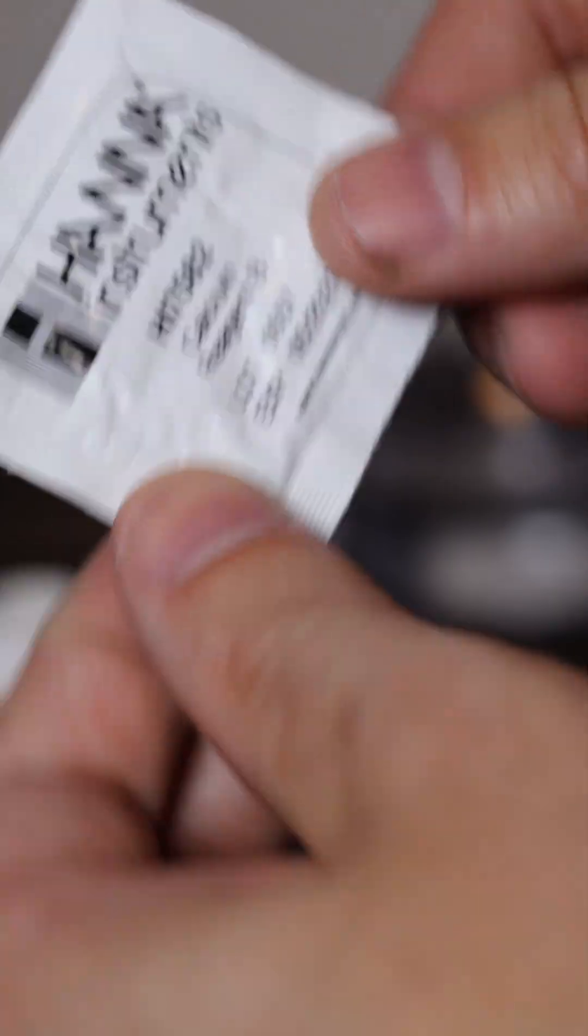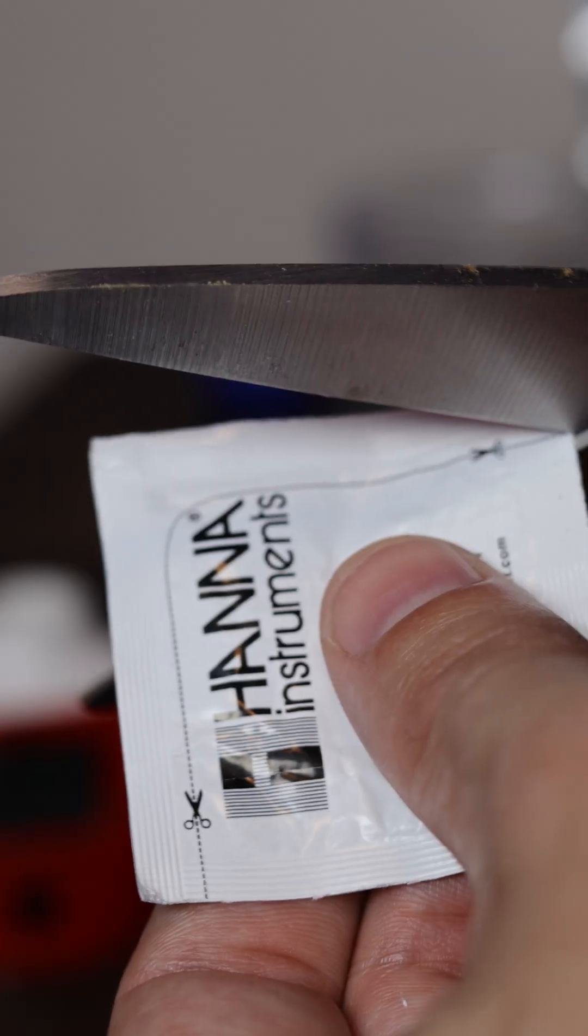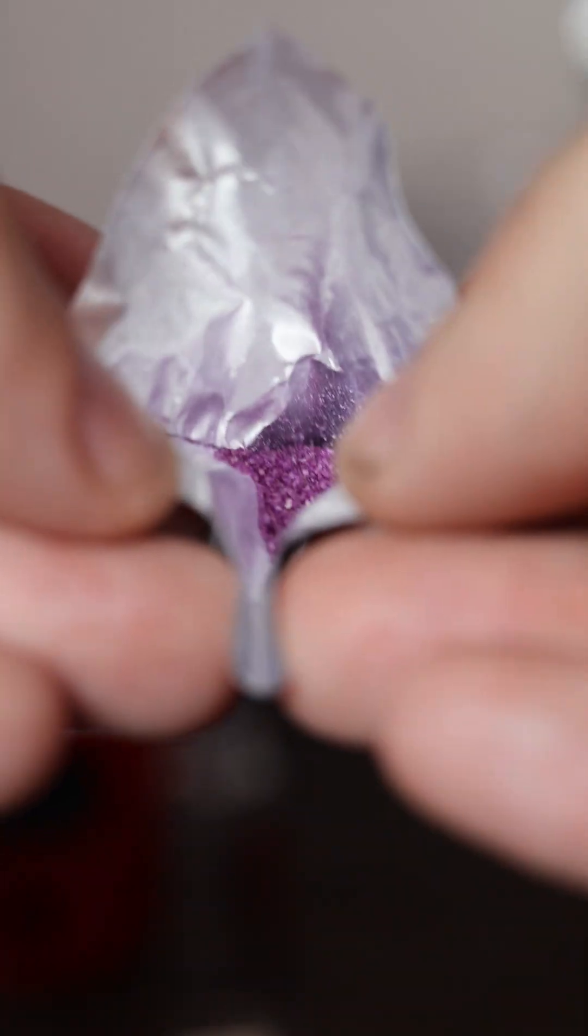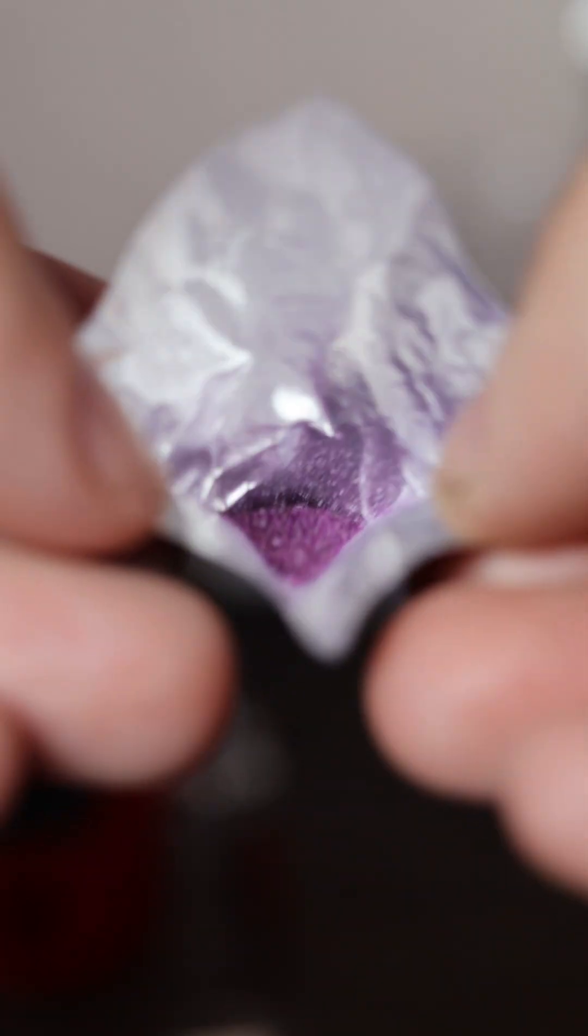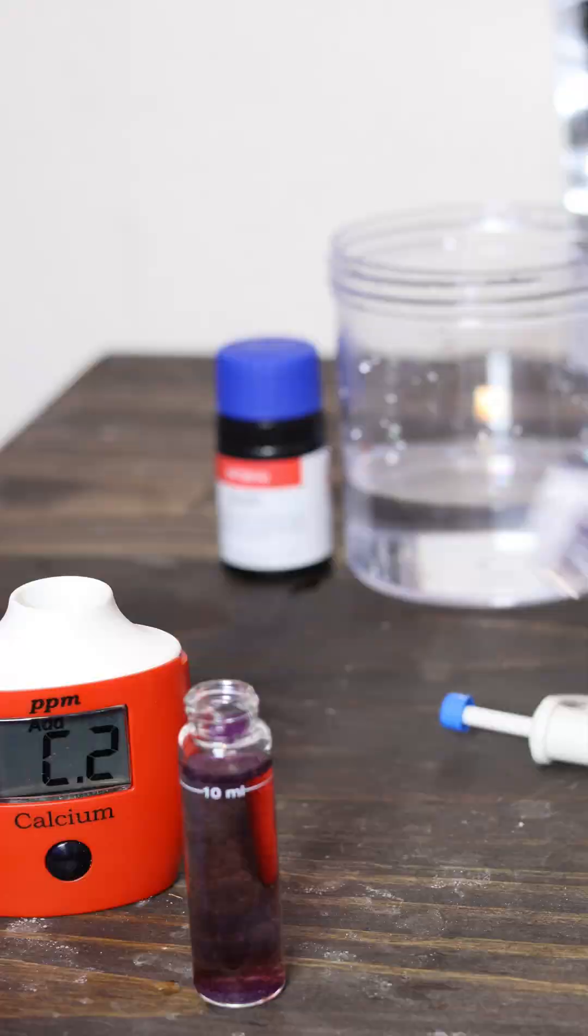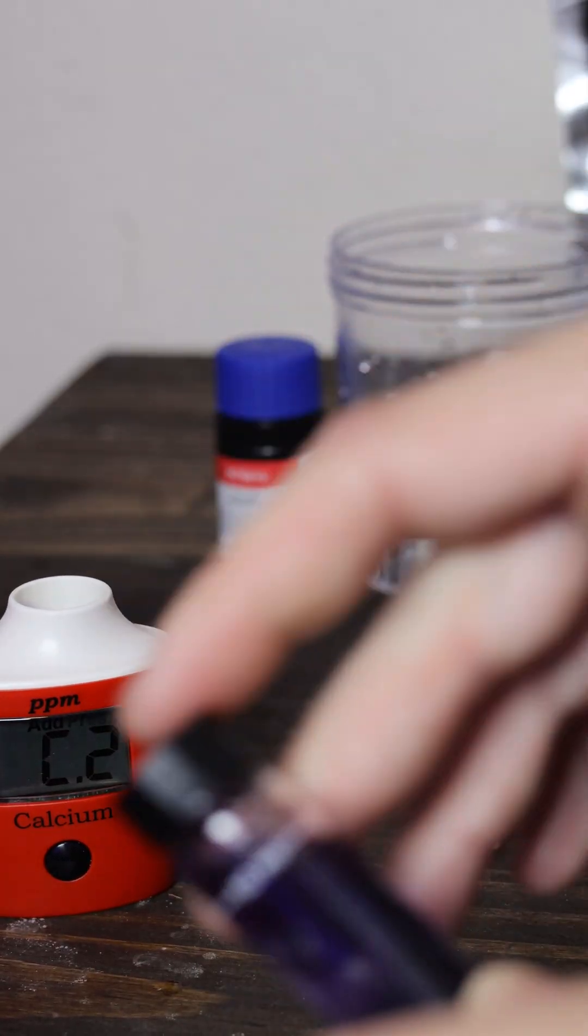Take the reagent B and get all of the reagent into the corner where my thumb was. Cut the packet on the dotted lines and to make the reagent easier to pour, put a crease in the packet like this. Pour the packet into the test tube. Make sure that all of the reagent dissolves and then clean the test tube again.